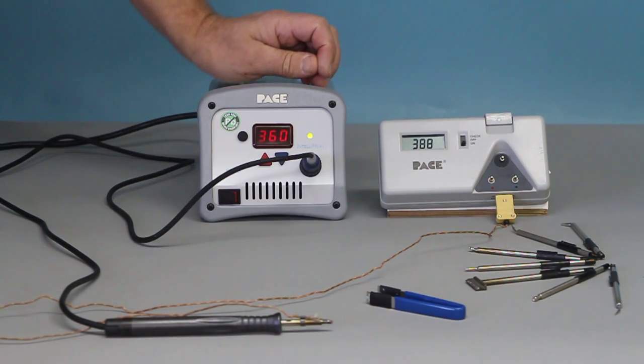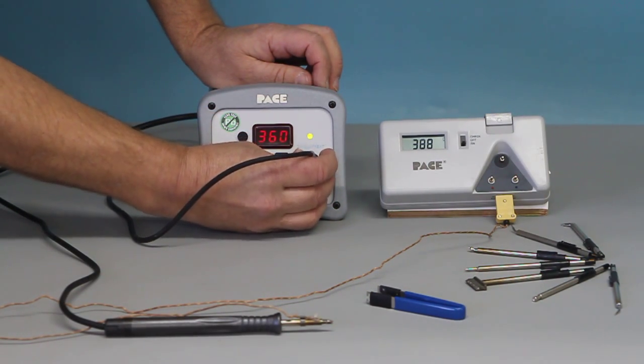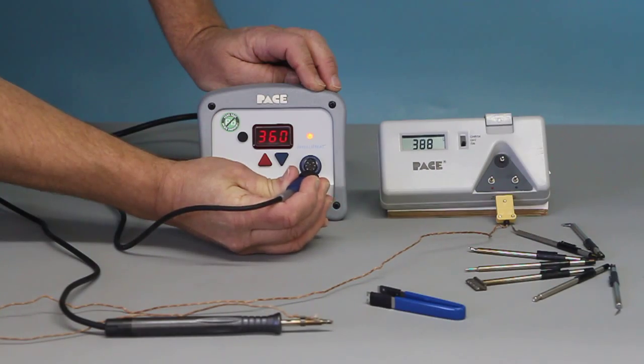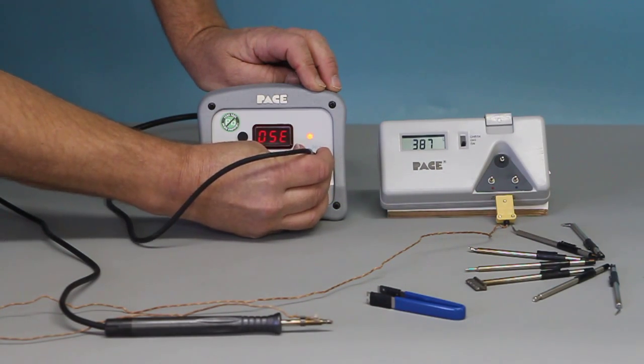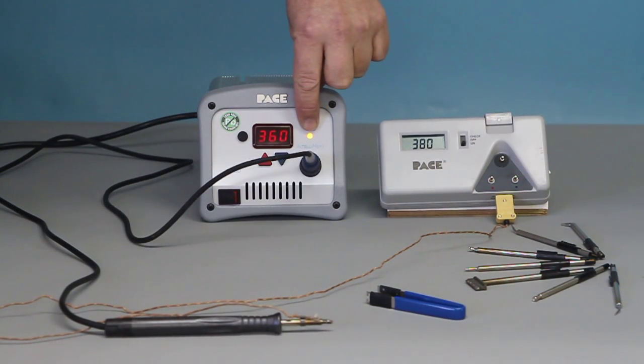To recalibrate this unit, it's actually very simple. What we need to do is just unplug the DIN plug here and plug it back in. See the orange light that's come on?